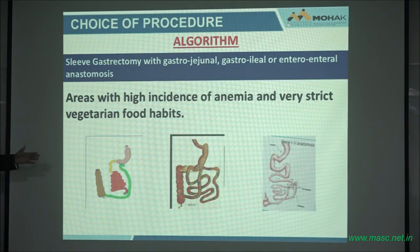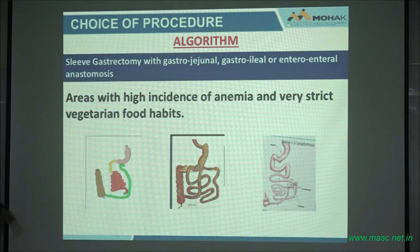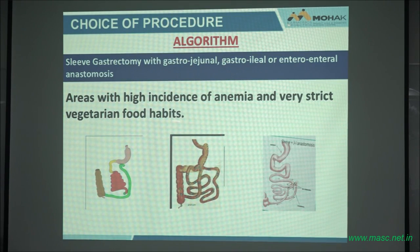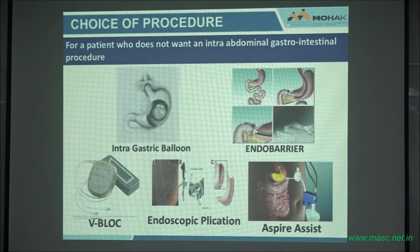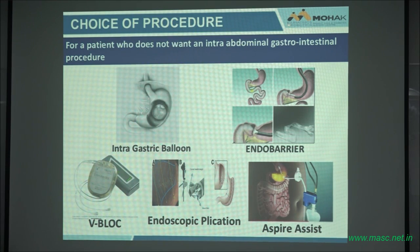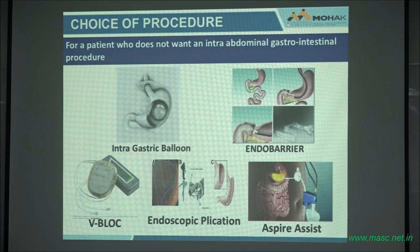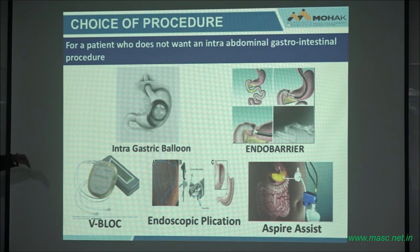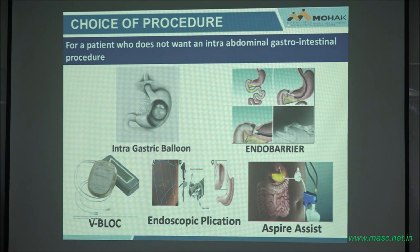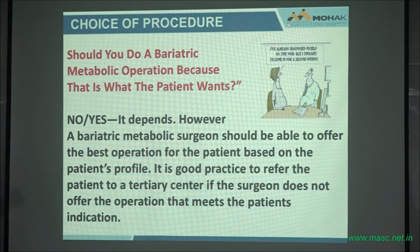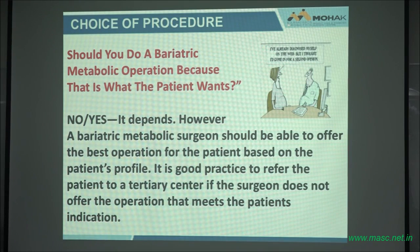This is called a bipartition — you let food go through the duodenum and also get the incretin effect. This is very good for places where there is a lot of anemia and strict vegetarian habit. You have choices. You know what procedure and why you do it. For patients who make up 95% of overweight patients who don't want surgery and don't want to be cut intra-abdominally, we have less effective measures: the balloon, the endobarrier, the V-block, the endoscopic plication, and the Aspire Assist.